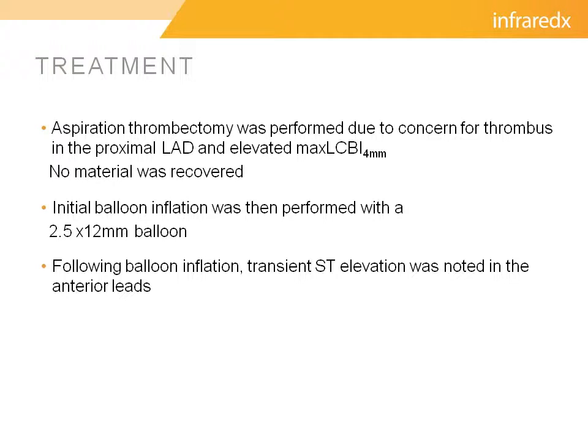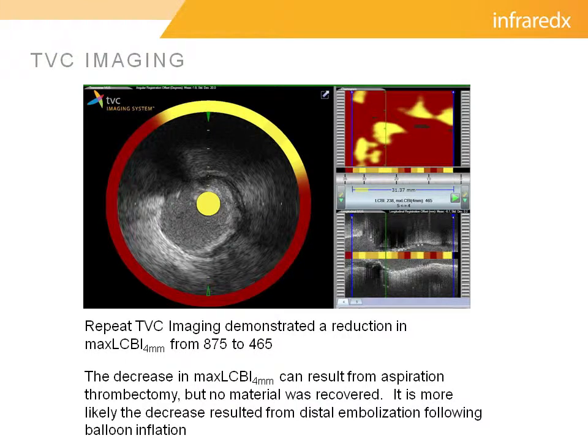Right after the balloon inflation, the patient developed transient ST elevations in the anterior leads and complained of some mild chest discomfort. The NIRS-IVUS catheter was reintroduced, and it was very interesting to see that our lipid core burden index had actually dropped from 875 to 465. Our theory was that the thrombus and plaque burden had actually migrated distally into the distal LAD after our balloon inflation, although some of it may have been reduced due to aspiration thrombectomy, but as mentioned previously, we really didn't get much material back from our aspiration catheter.